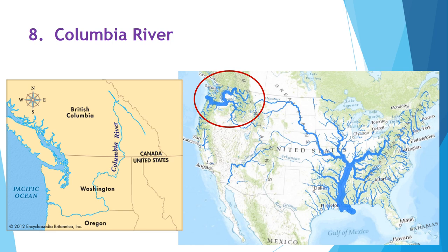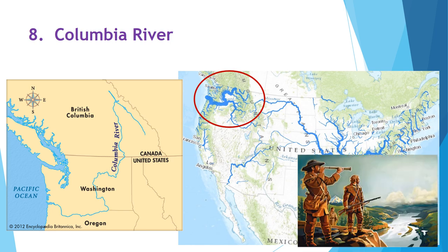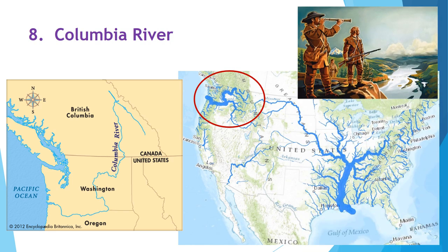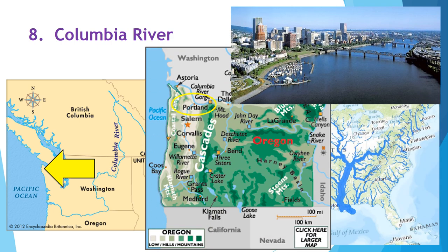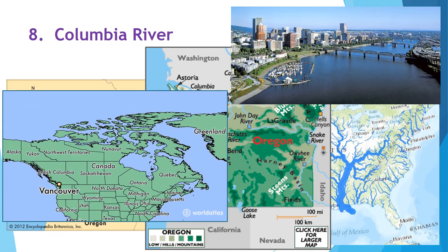The Columbia River is the westernmost river explored by Lewis and Clark when they were sent by President Thomas Jefferson to map out the west. This river flows from Canada to the Pacific Ocean. Portland, Oregon and Vancouver, Washington are both large cities that border this river.